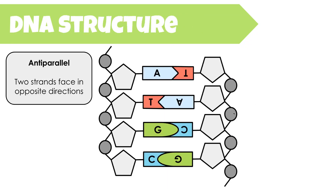Looking more closely at DNA structure, if we flatten out the two paired strands, we notice that they are anti-parallel — meaning the two strands face in opposite directions. Looking at the sugar rings and phosphates on the left strand, they point upward, whereas on the opposite strand they point downward. In upper-level science classes this is described as the five-prime and three-prime ends of DNA — it's really just looking at the way those sugar rings are facing in opposite directions.